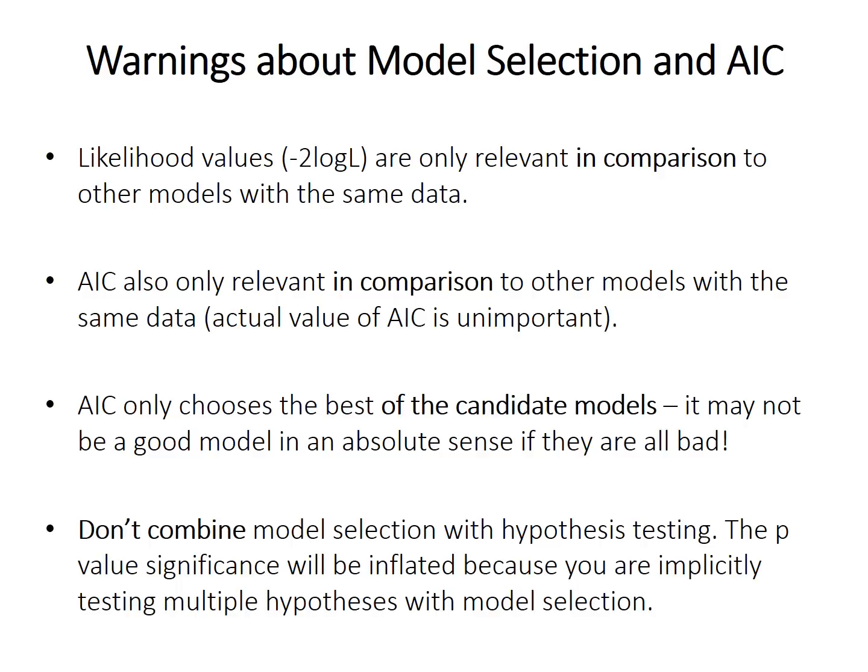And finally, don't combine model selection with hypothesis testing. So if you use model selection to figure out which combination of variables, for example, is the best explanation for your distribution, you shouldn't then do hypothesis testing and get a p-value because the significance that you would get will be inflated. You're examining multiple models and choosing the best, and that's the same thing as testing multiple hypotheses and reporting only the most significant, and you should never do that. So model selection and AIC are exploratory methods, which are valid methods to use, but you should never mix these exploratory with hypothesis testing approaches.